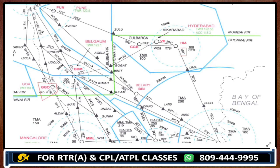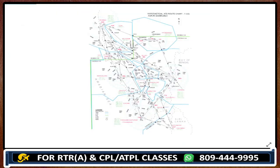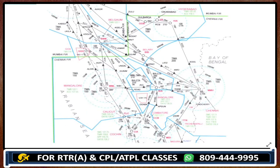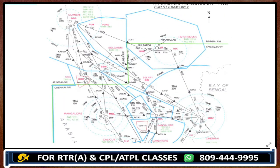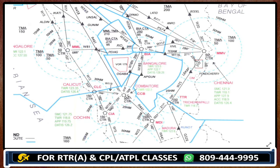If somebody is asking for the radial from Chennai — you are flying from Chennai to Trichy — your radial would be 215, because radial is always measured from the station. If you check Hyderabad, flying from Hyderabad to Chennai the radial would be 158. This is how you identify a radial.